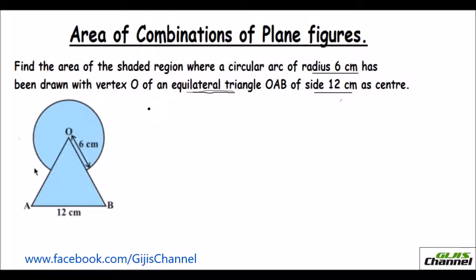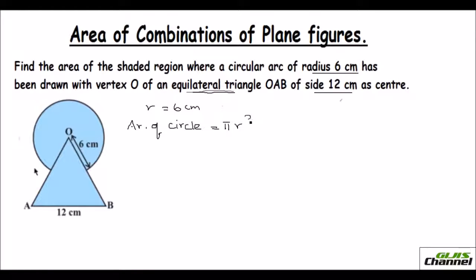The first problem: find the area of the shaded region where a circular arc of radius 6 cm has been drawn with vertex O of an equilateral triangle, and the side of the triangle is 12 cm. The radius R is given as 6 cm. Area of circle equals π r squared, that is 22/7 times 6 times 6, which gives 113.14 square cm.